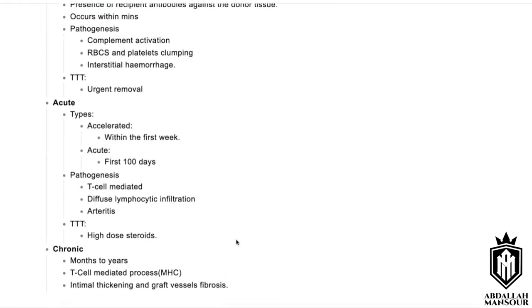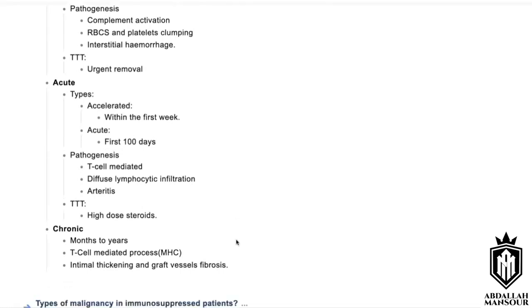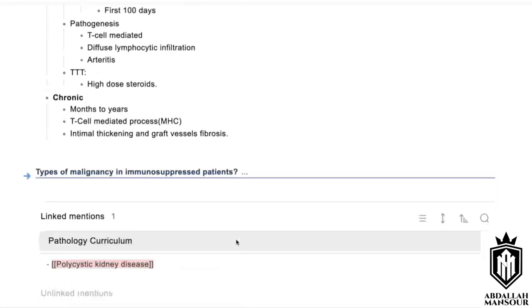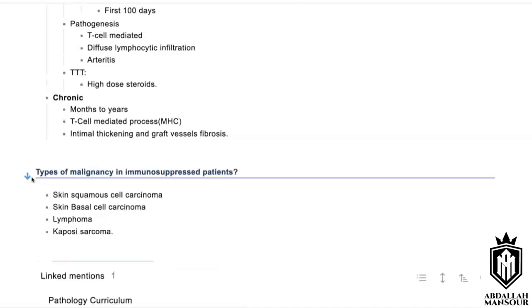What types of malignancy occur in immunocompromised patients? These include squamous cell carcinoma of the skin, basal cell carcinoma, lymphoma, and Kaposi's sarcoma.